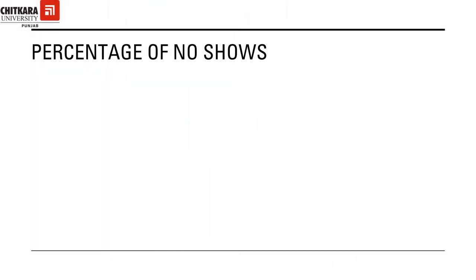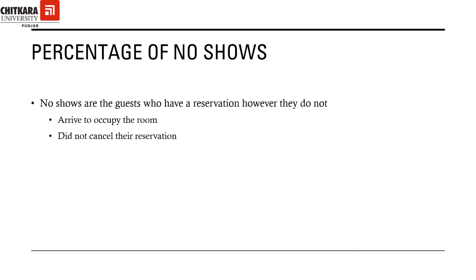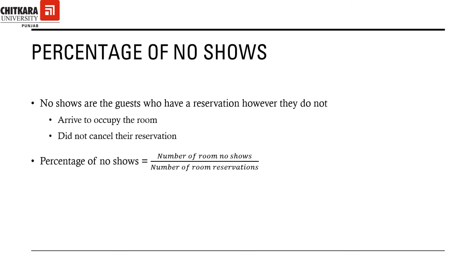The percentage of no-shows. Who are no-shows? These are guests who have reservations for a particular date; however, they do not arrive on that date to occupy the rooms and did not even cancel the reservation. We can calculate the percentage of no-shows by dividing the number of no-shows by the number of room reservations. Since the room will remain vacant in this case, for the purpose of forecasting, we will add this.